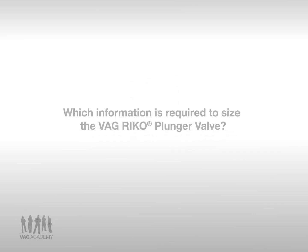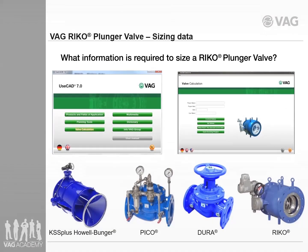What information is required to size the Ricoh plunger valve? VAG uses its own valve calculation software named USCAD Control to size the proper control valves such as the KSS, HoloJet, the Pico, the Dura and the Ricoh control valve.